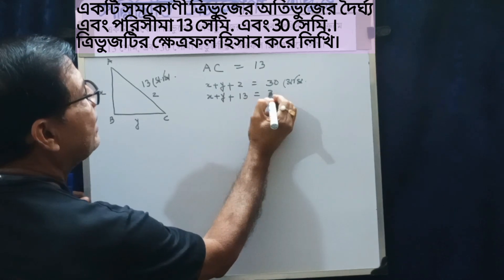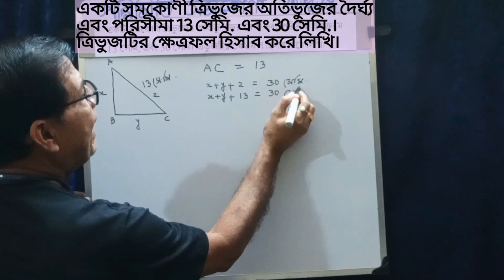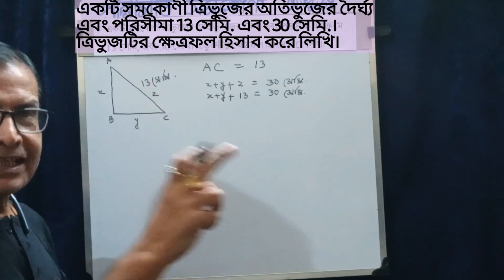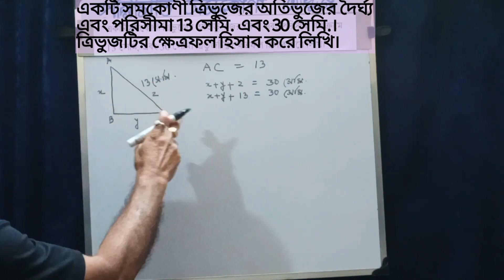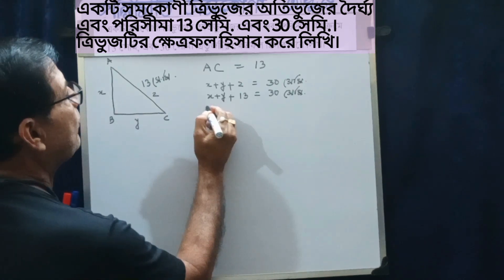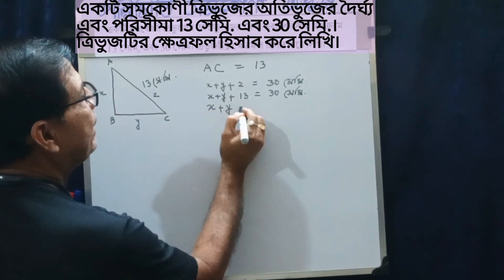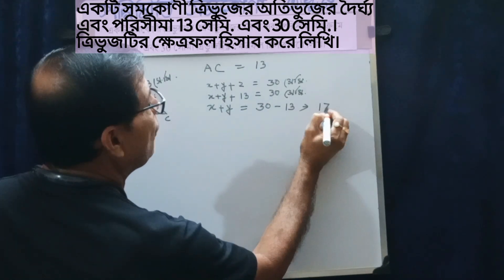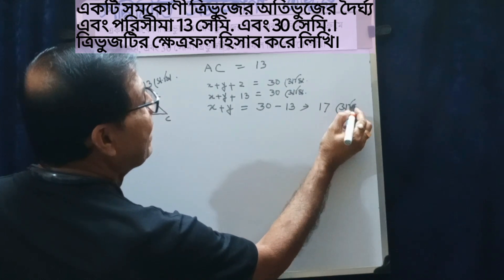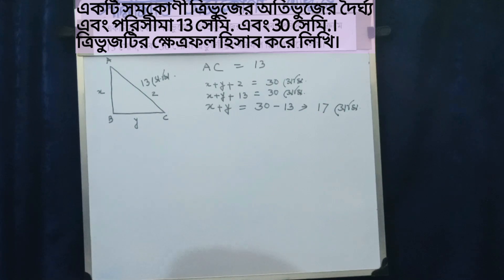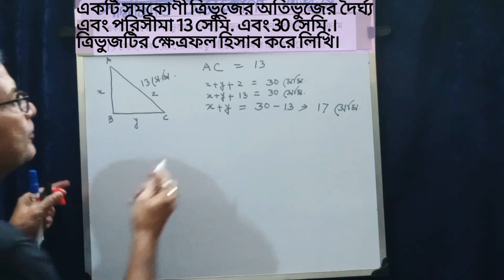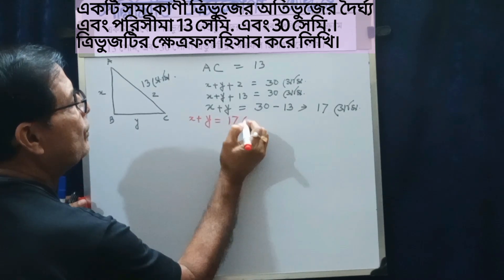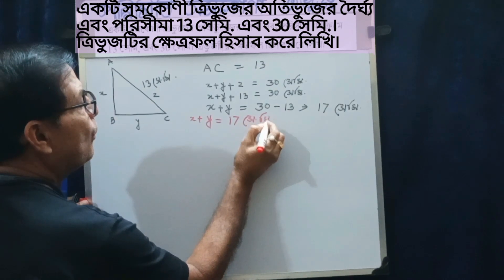x plus y ની સરવાળો — આ ત્રિભુજ ABC ની x plus y ની સરવાળો કૂ, x plus y equals to — આ આપણે 17 સેન્ટિમીટર ગણ્યું. x plus y = 17.